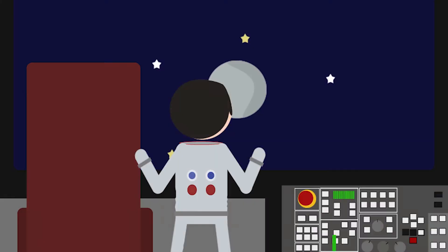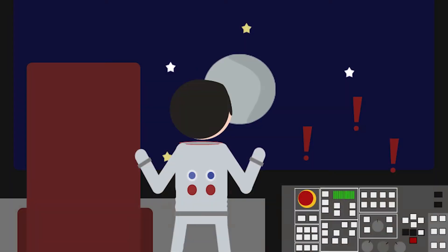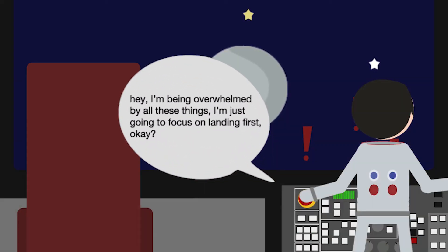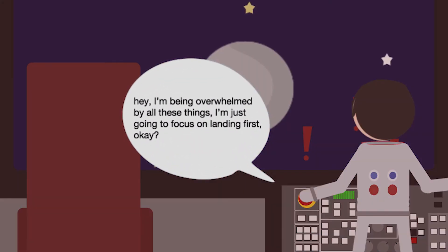During the mission, the computer became overloaded with tasks. However, thanks to the program done by Hamilton, the computer began to eliminate many tasks by essentially just saying, hey, I'm being overwhelmed by all these things, I'm just going to focus on landing first, okay?